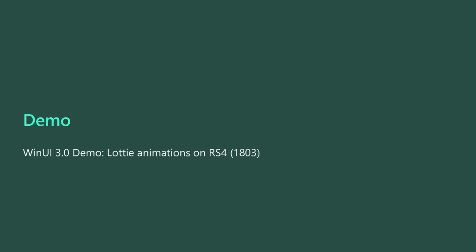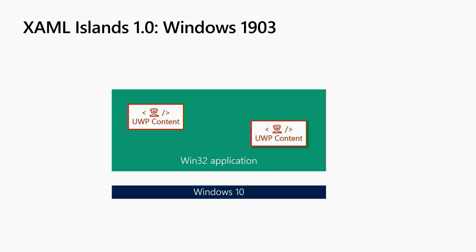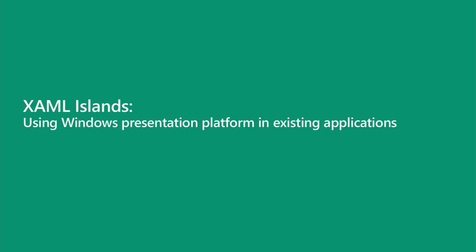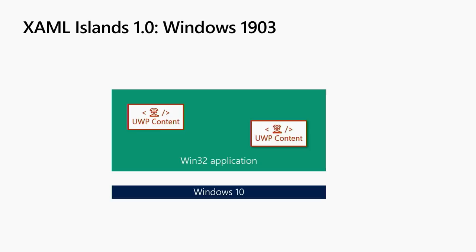So to summarize our previous section: we've taken basically the capabilities up until 1903 — the latest presentation capabilities shipping in Windows. We've extracted the whole composition, animation, and controls layer out of that and made it available on in-market versions of Windows 10, from 1703 plus. Now as a developer you can take advantage of new features like the Lottie capabilities all the way back to RS2.